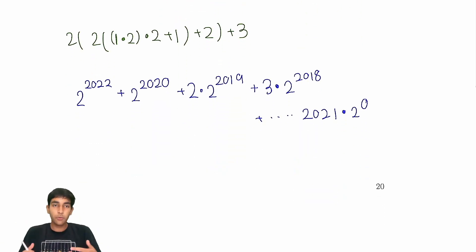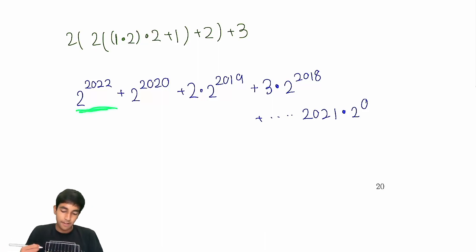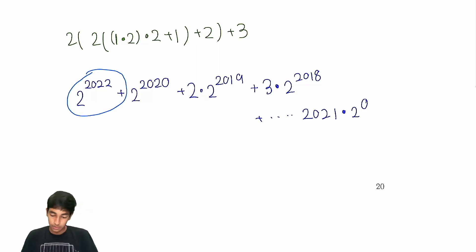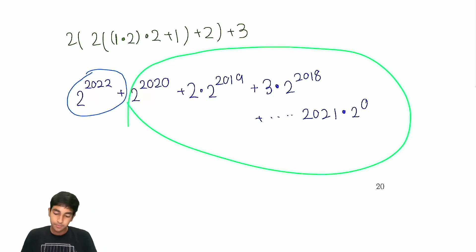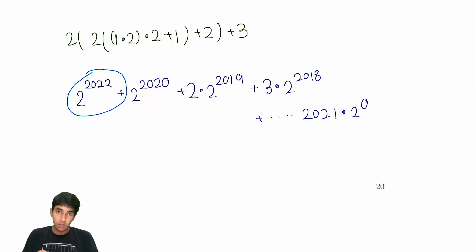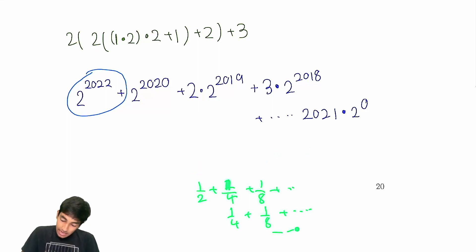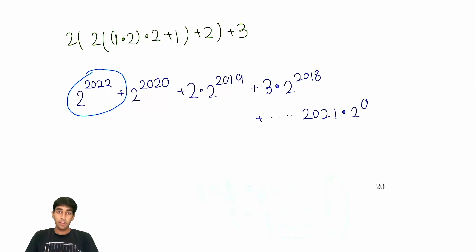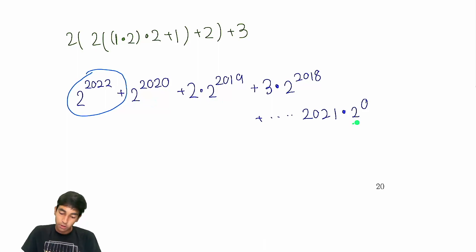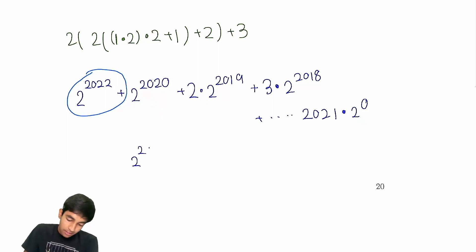Now we need to find this expression for the units digit. The 2 to the 2022 term we'll handle separately. For the rest, recall the arithmetic-geometric series trick: we want 2 to the 2020 plus 2 to the 2019 plus ... plus 2 to the 0, forgetting about the coefficients first. By the geometric series formula, that's 2 to the 2021 minus 1.